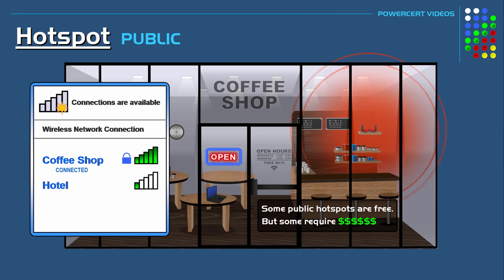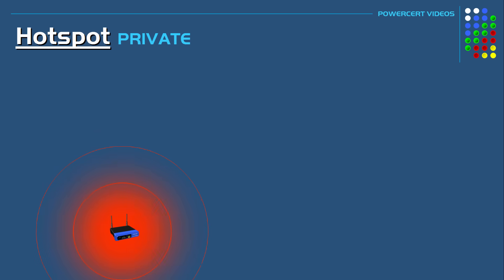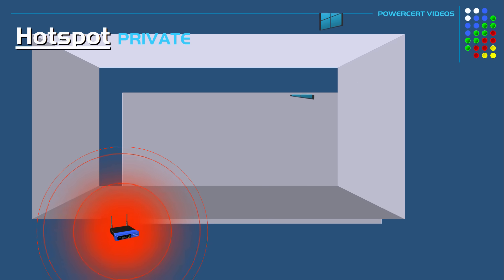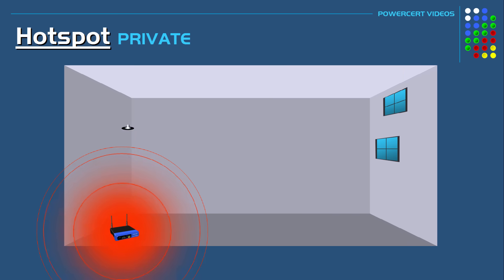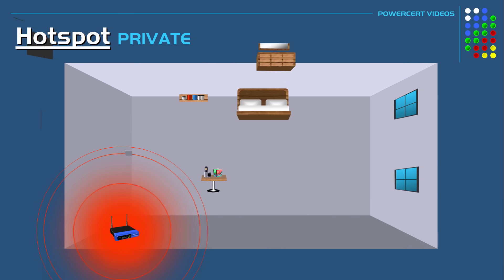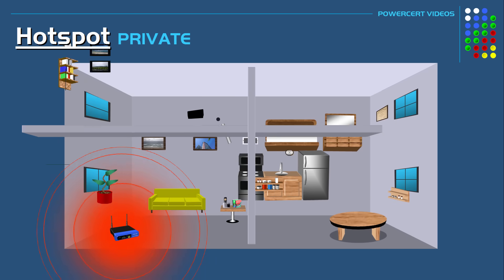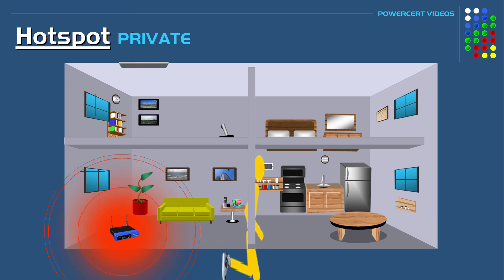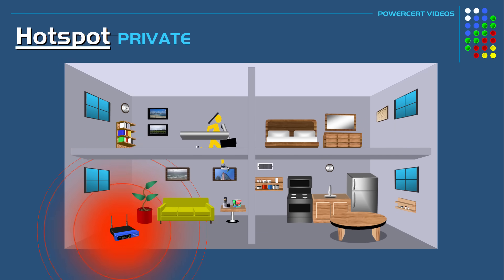Those were examples of public hotspots. Now an example of a private hotspot would be something like your home. Most people who have an internet connection in their home would have a Wi-Fi router that would broadcast a wireless signal so that anyone inside their home, such as family and friends, would be able to access the internet.